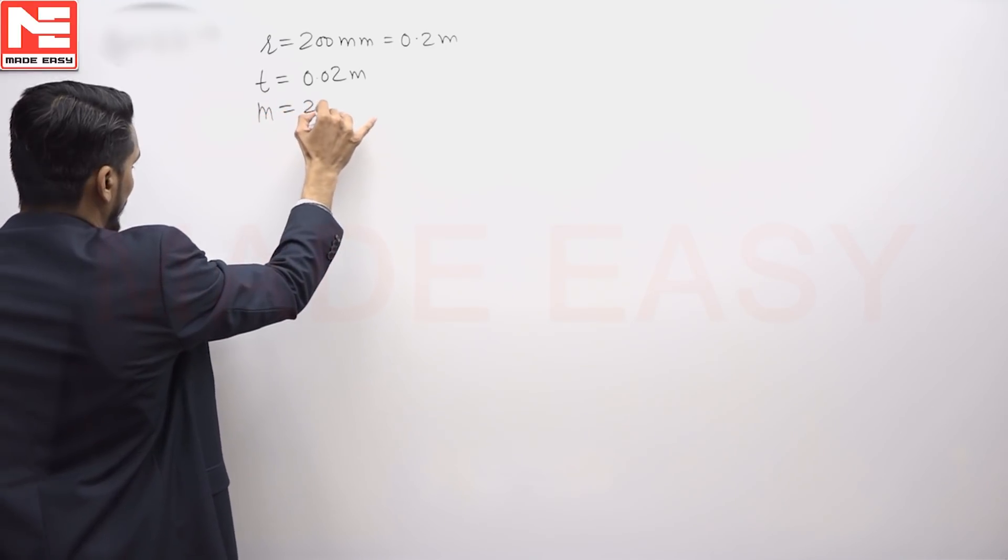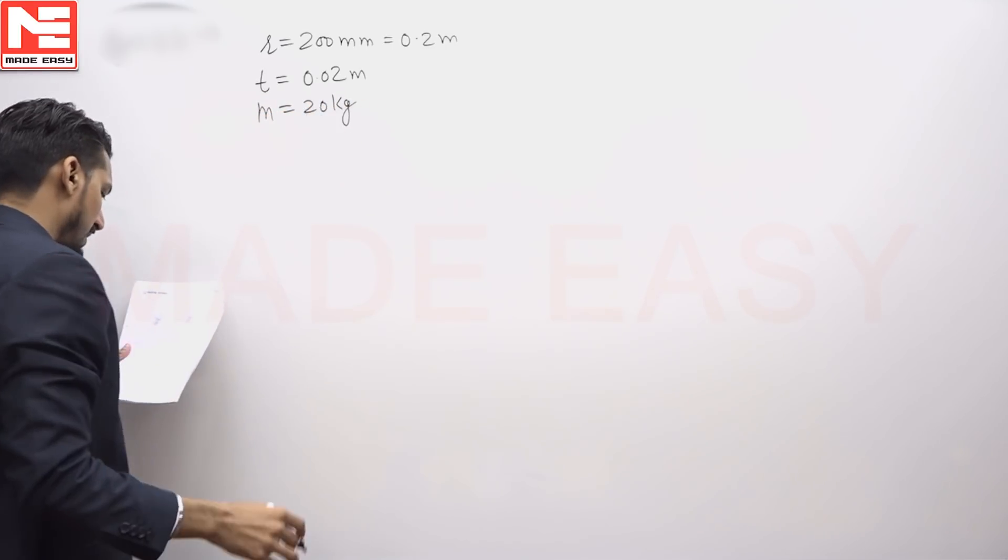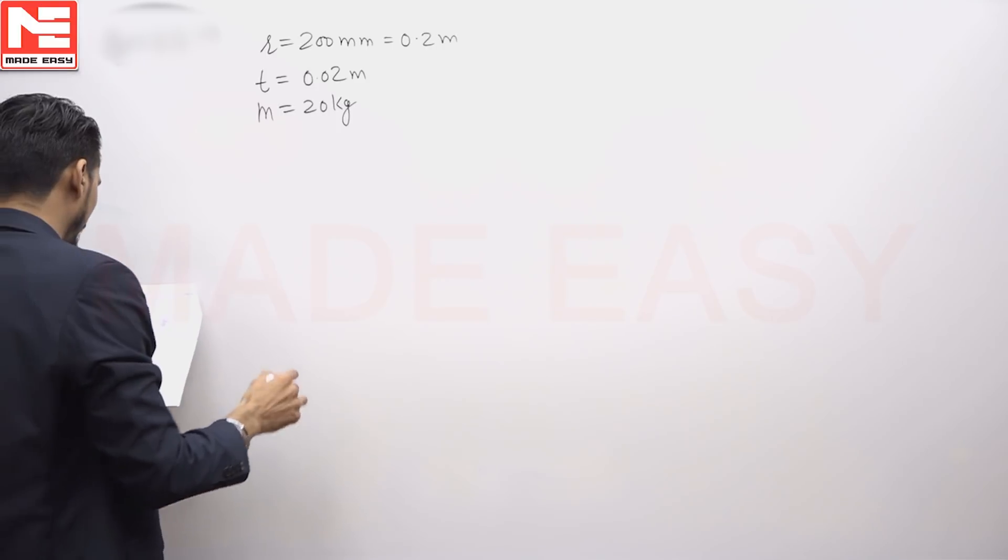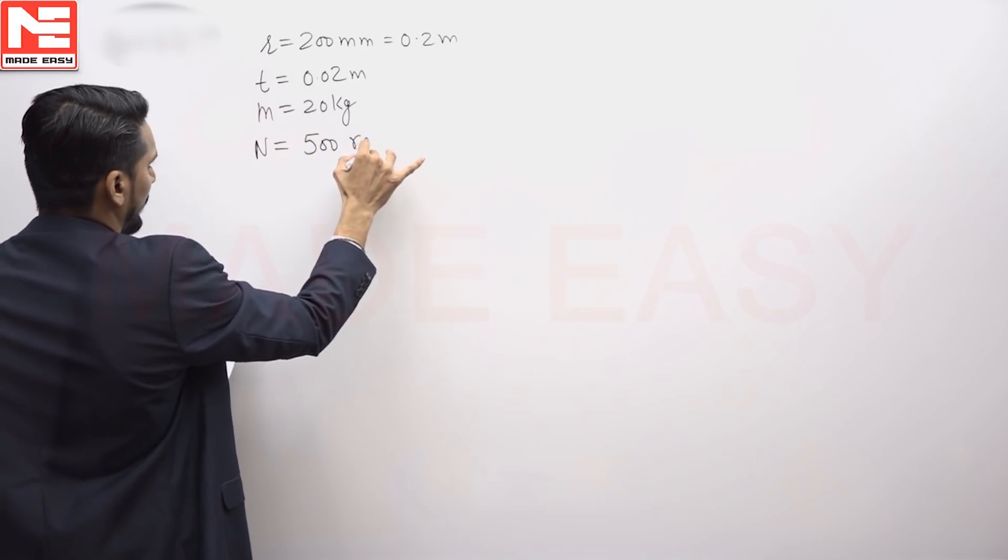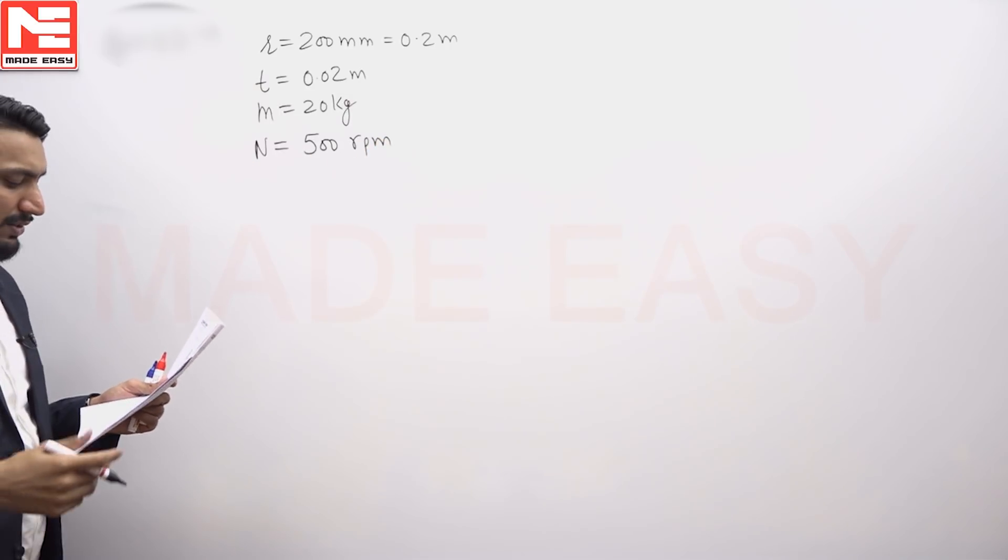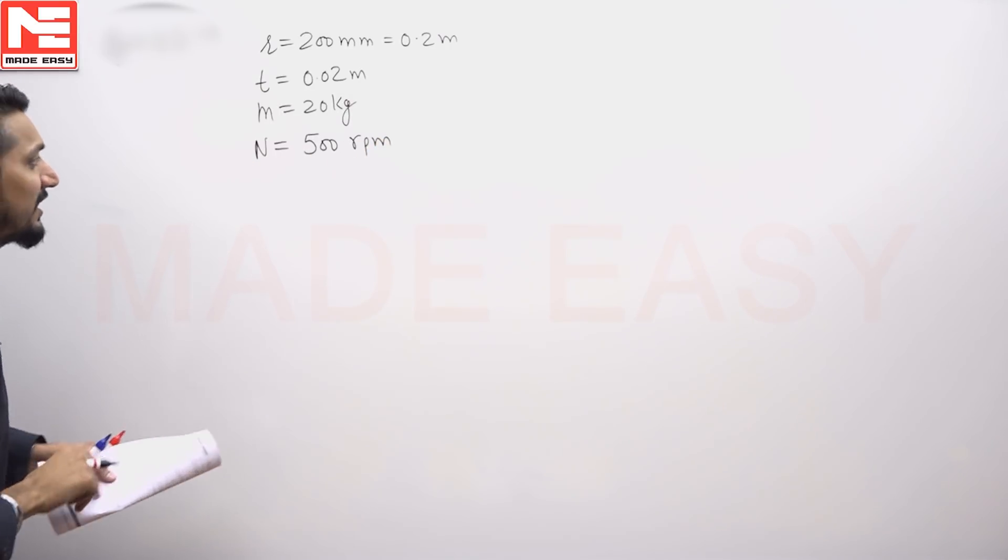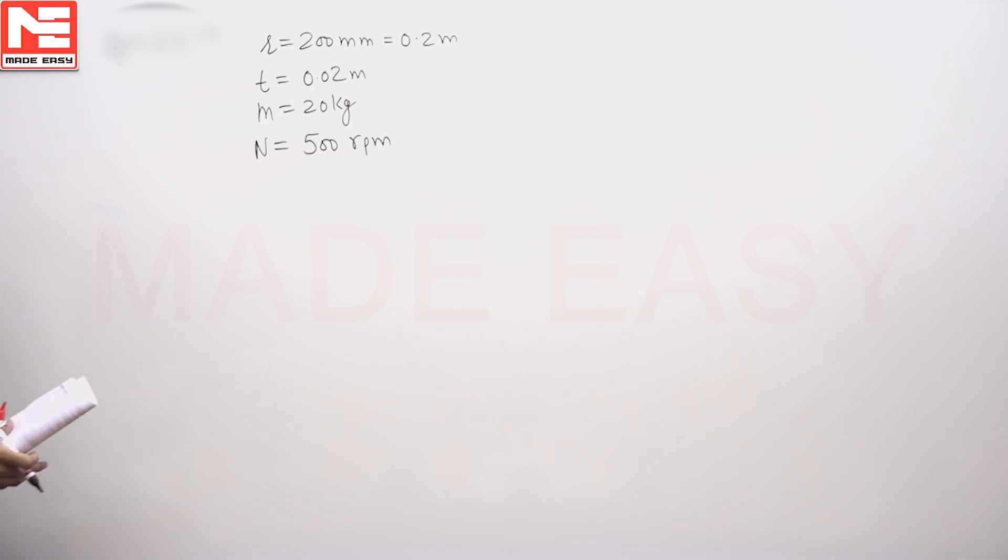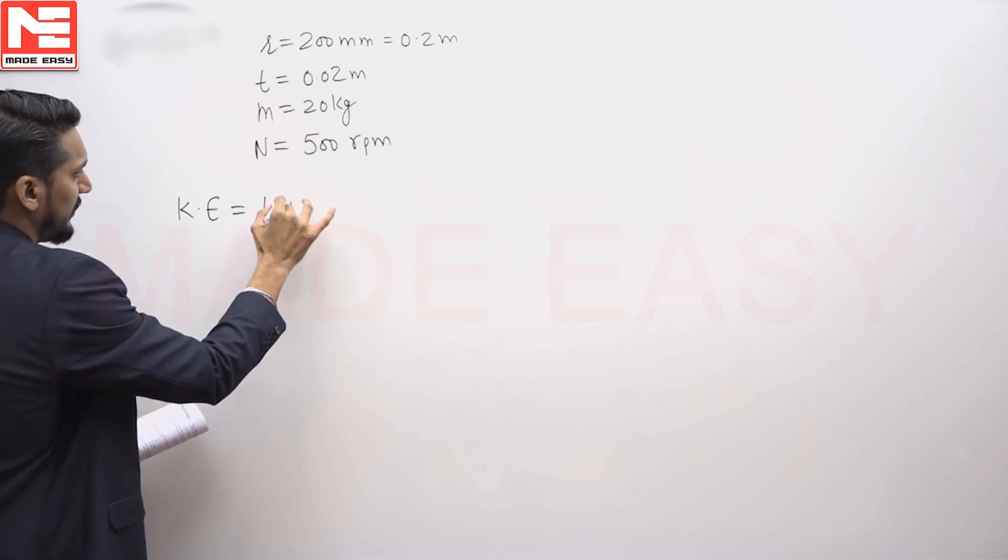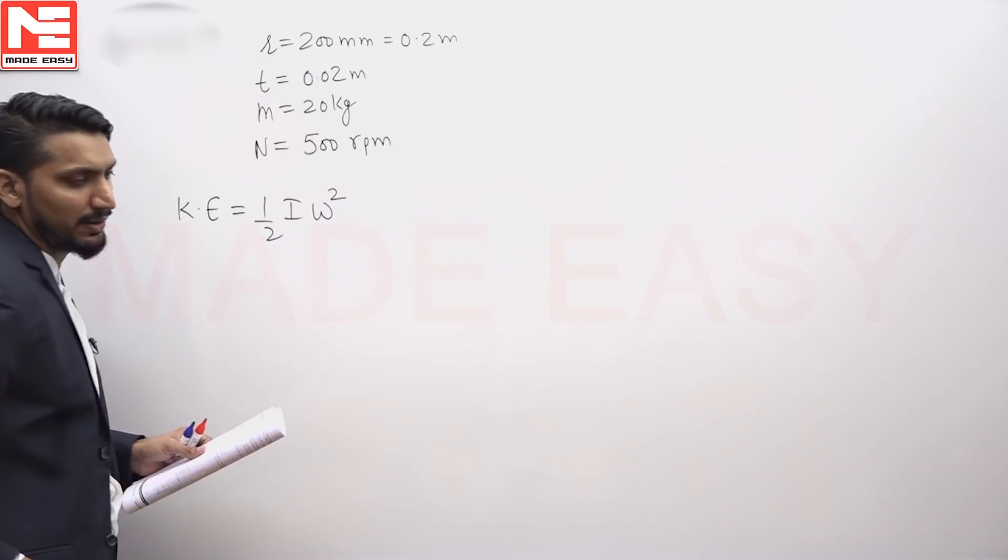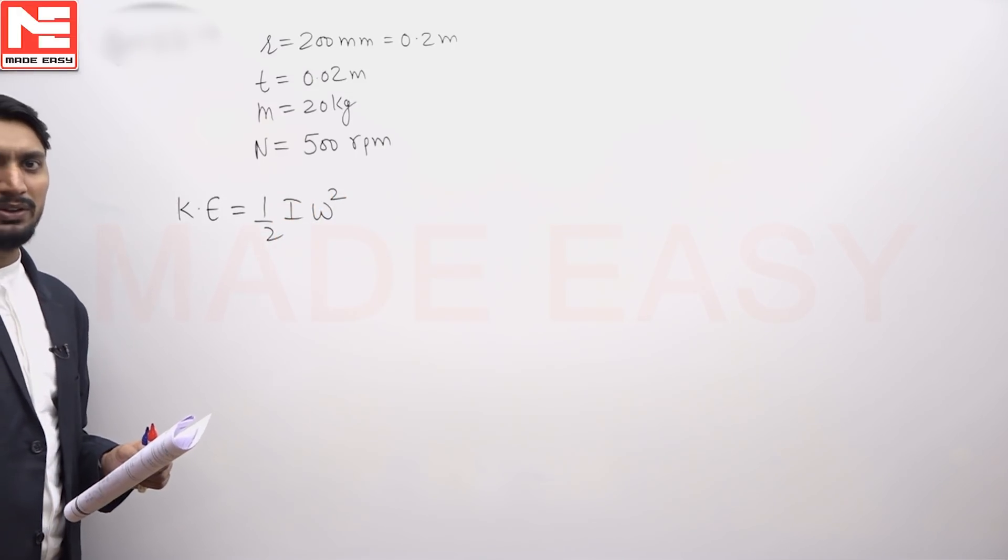Mass is given as 20 kg, used as a flywheel at speed 500 rpm. The kinetic energy of the flywheel—for rotation, kinetic energy is 1/2 I ω². We have discussed this in class.